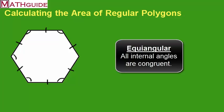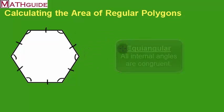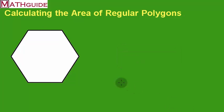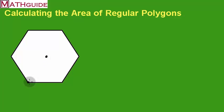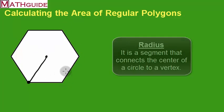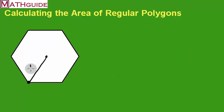Any time you see the word 'regular,' all of them are equal. So for our first problem, we're going to start with a regular hexagon that has a radius of 10 meters. The radius is the distance from the center of the polygon to a vertex. Hexagon means six sides. We connect each vertex to the center, and each of those six radii is 10 meters.